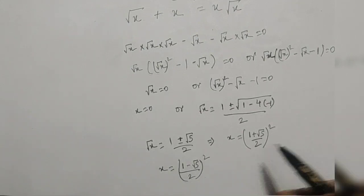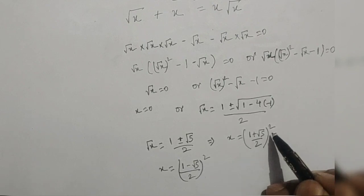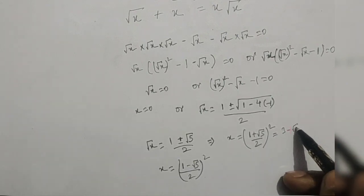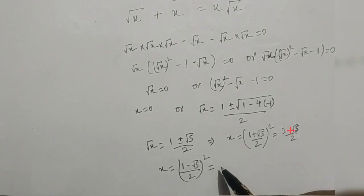Now simplify this: 1 plus 5, 6 minus 2 root 5 over 4. So 3 minus root 5 by 2, and same as we will solve this, so we will have 3 minus root 5 by 2.